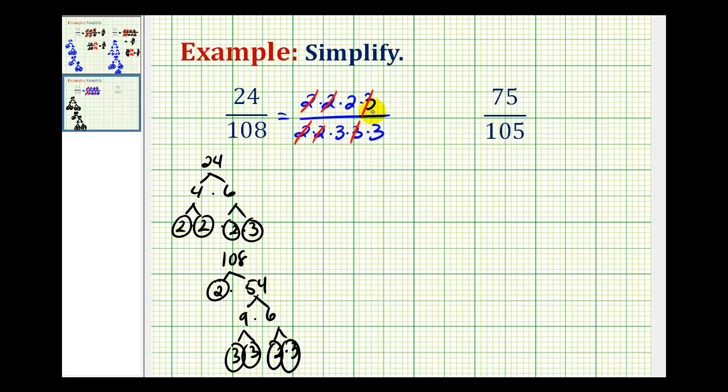So whatever factors remain will give us the simplified fraction for 24 over 108. In our numerator we have a factor of two. Our denominator we have three times three, which equals nine. Twenty-four one hundred-eighths simplifies to two-ninths.